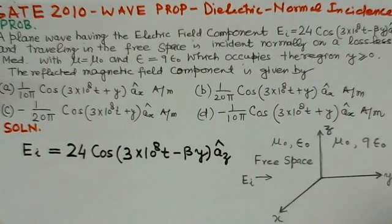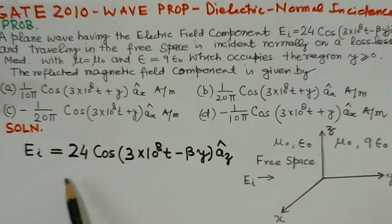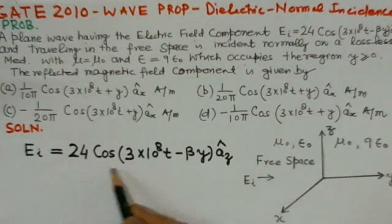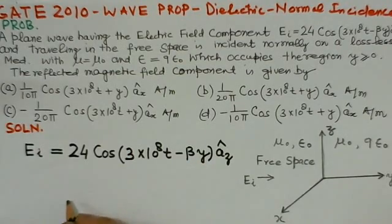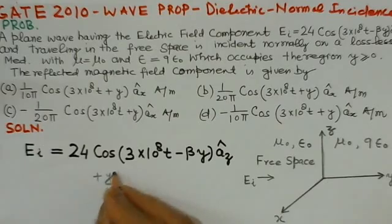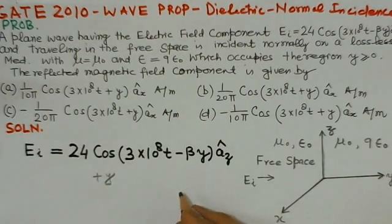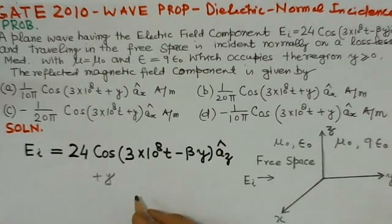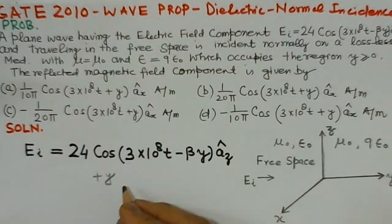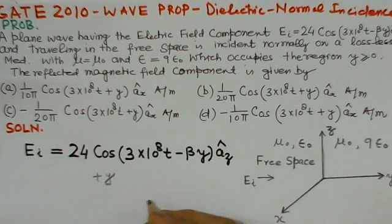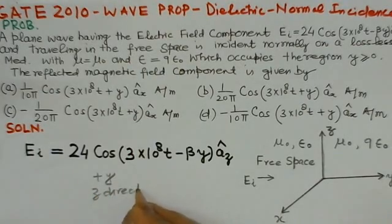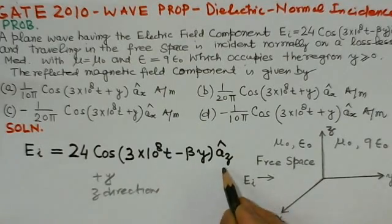We can see the electric field component which is given here. The Ei component is 24 cos(3×10^8t - βy). What we observe here is that the direction of propagation is plus y. And the electric field component has a field component in z direction.